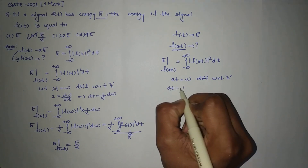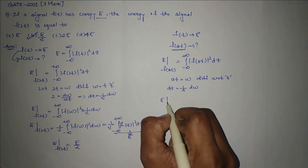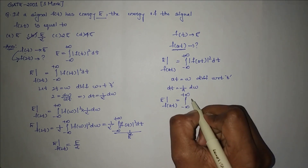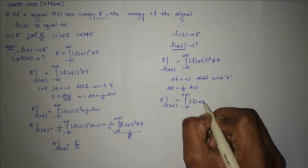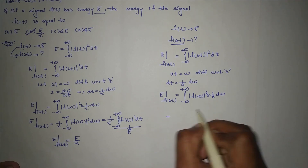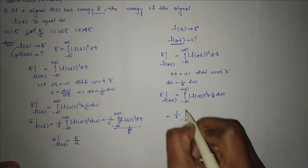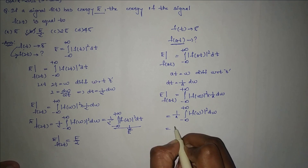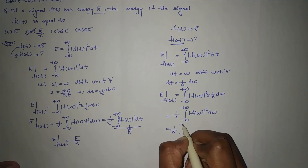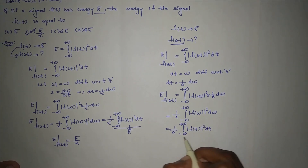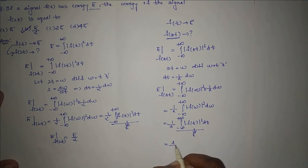Then dt equals (1/a) dW. So the energy equals integration from minus infinity to plus infinity of mod f(W) whole square times (1/a) dW. Taking (1/a) outside the integral: (1/a) times integration from minus infinity to plus infinity of mod f(W) whole square dW. Replacing W with t, this equals (1/a) times integration from minus infinity to plus infinity of mod f(t) whole square dt. This value is e, so the result is (1/a) times e, which equals e/a.